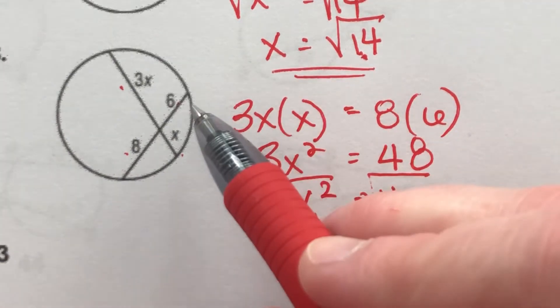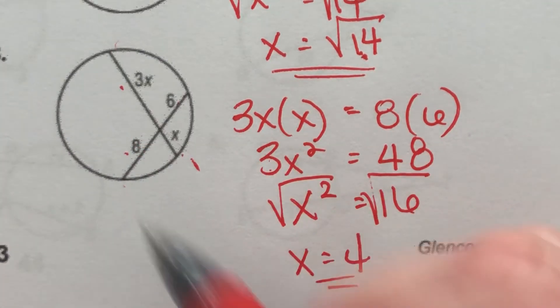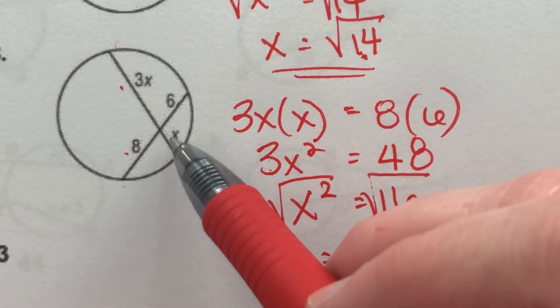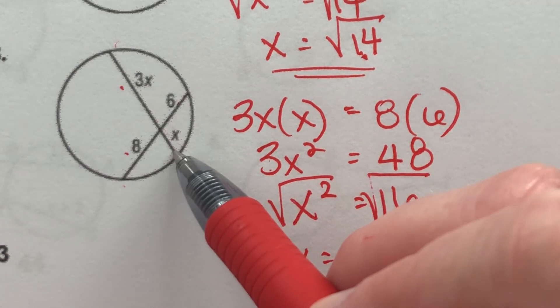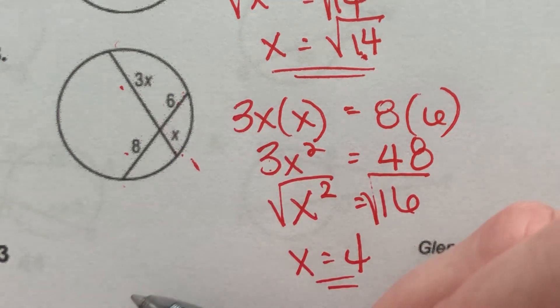Okay, so pretty easy lesson. When you have two lines inside a circle, one segment multiplied by its other segment is equal to the product of the segments on the other line. Okay, let me know if you have questions.